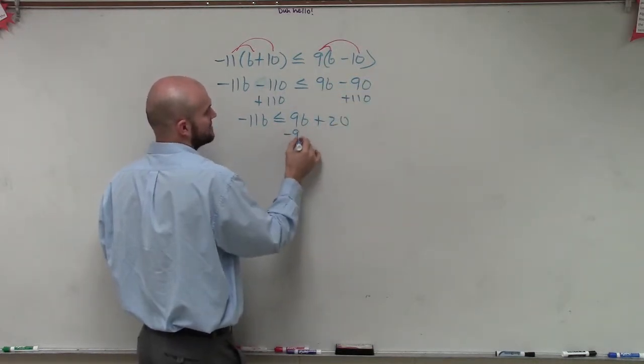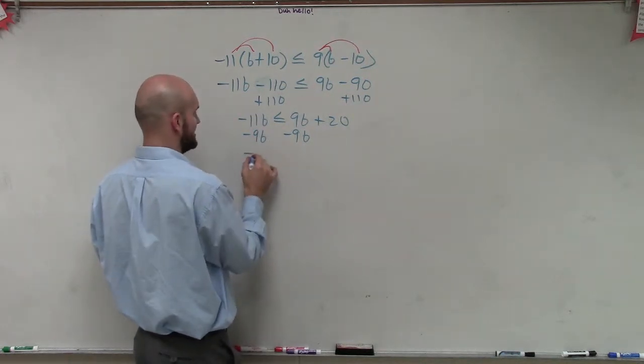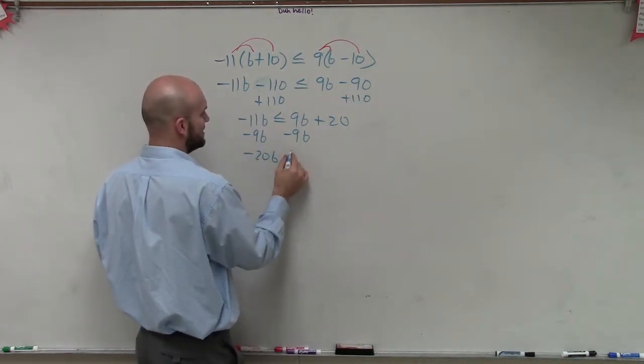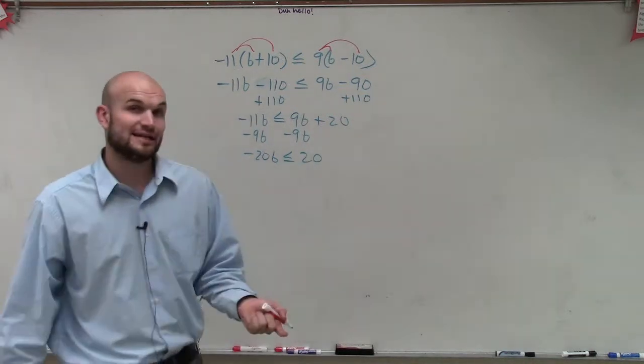Then I subtract 9b. And I get negative 20b is less than or equal to 20.